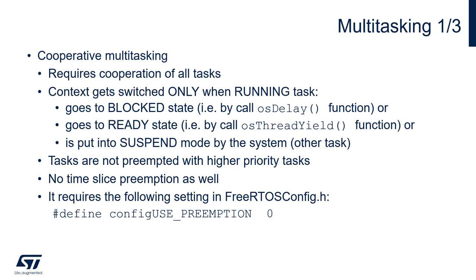Schedulers can work within cooperative or preemptive configuration. In cooperative multitasking, it requires cooperation of all tasks. The context can be switched only when the running task goes to a blocked state — for example by a call of osDelay function — or it goes to ready state, for example by a call of osThreadYield function, or is put into suspend mode by the system or another task. Tasks are not preempted by higher priority tasks, and there is no time slice preemption. To activate this mode, it is needed to define configUSE_PREEMPTION and set it to zero within the FreeRTOSConfig.h file.